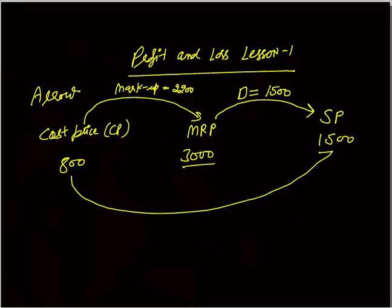Now what is this difference, difference in cost price and selling price? This difference is called profit. The seller's cost was Rs. 800, he sold the product to you at Rs. 1500, so profit is Rs. 700.